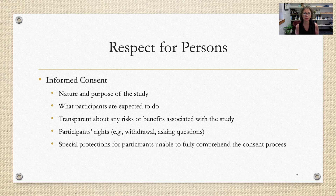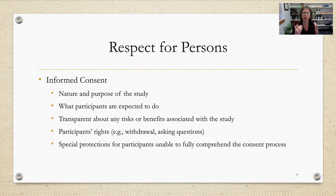There also need to be special protections for participants who might be unable to fully comprehend the consent process. For example, you can't have an informed consent written at a college level if your participants are just finishing fifth grade — it needs to be written at a level the participant can understand. And if the participant is nonverbal or not literate, special protections must be in place to ensure they understand they can withdraw or ask questions.